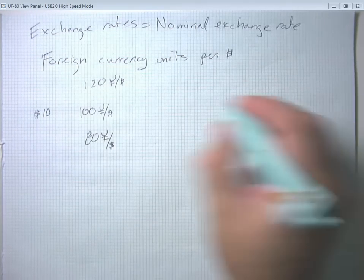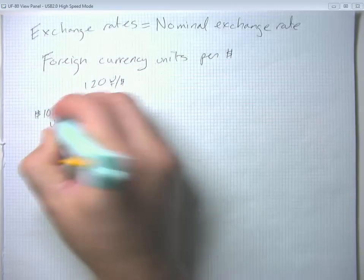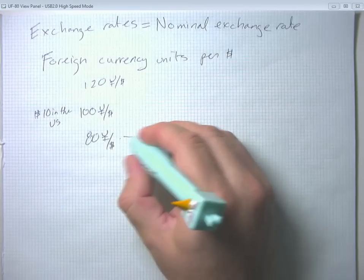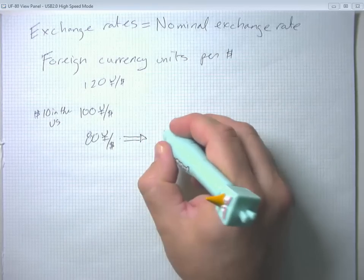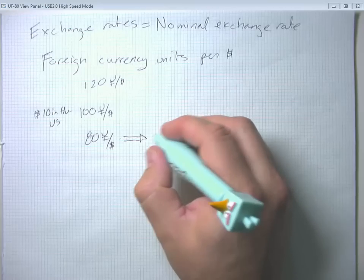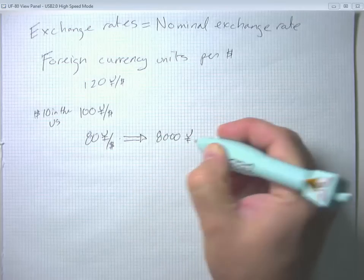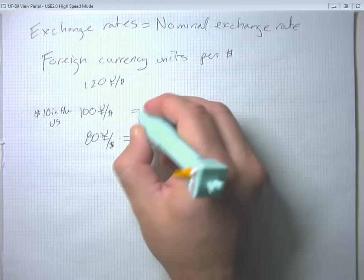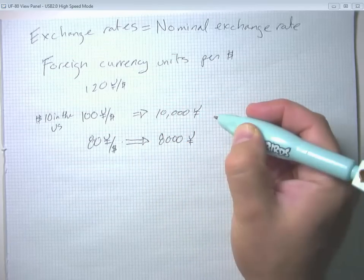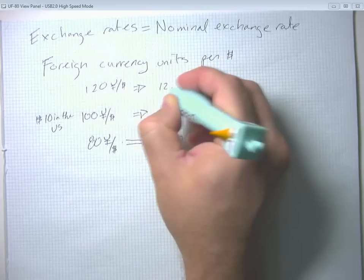And let's think about some item that costs $10. So if it costs $10 in the US, if the exchange rate is 80 yen per dollar, then for Japanese consumers it costs 8,000 yen. And if it's 100 yen per dollar, then for Japanese consumers it costs 10,000 yen. And up here, we're up at 12,000 yen.